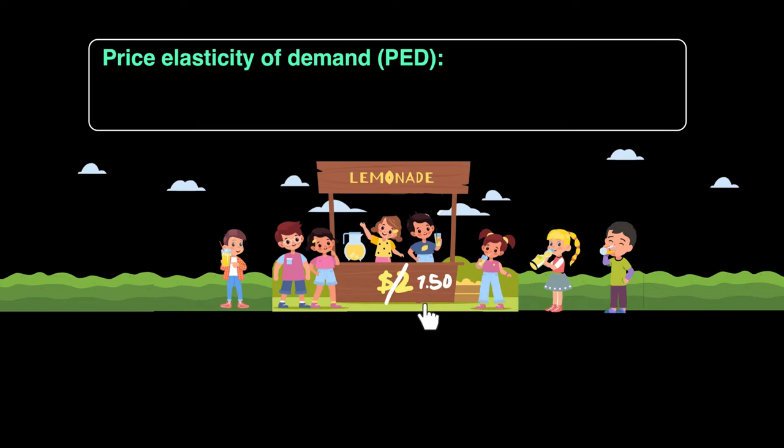From three customers, you've gone to six customers by dropping fifty cents on the price of your lemonade. That's a 25 percent decrease in price — fifty cents on two dollars — and we've seen the number of customers double, which is a 100 percent increase in customers.